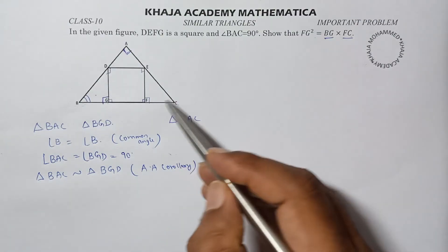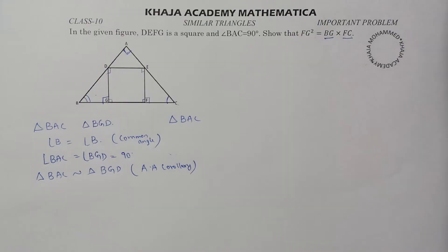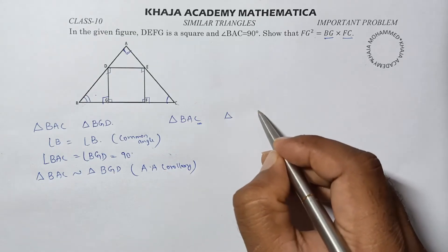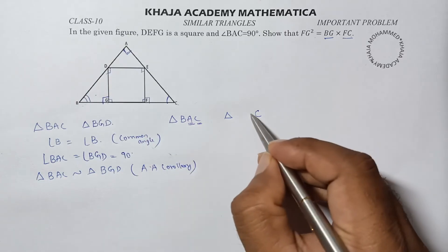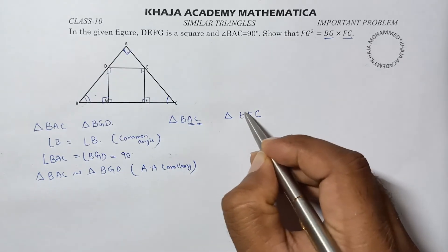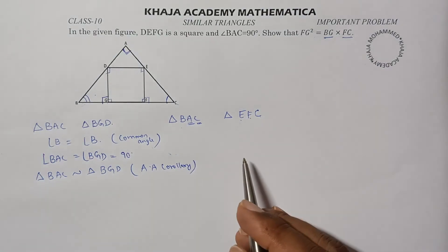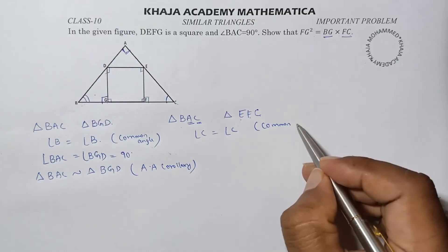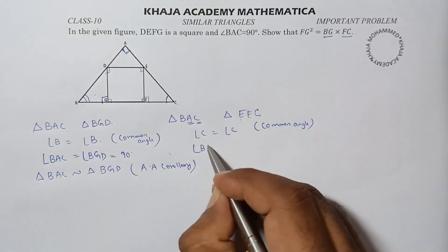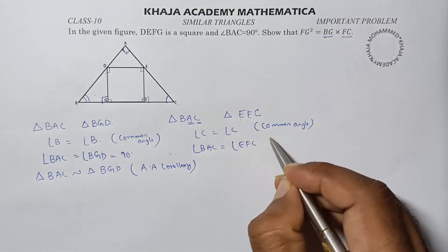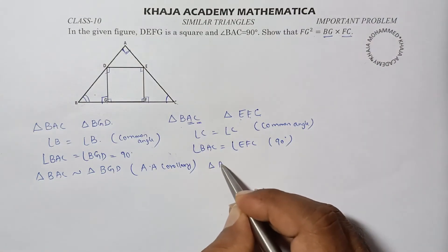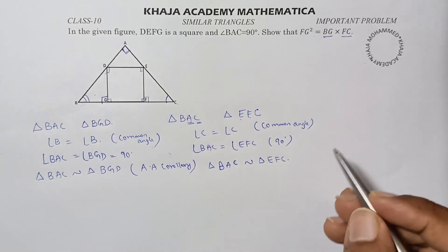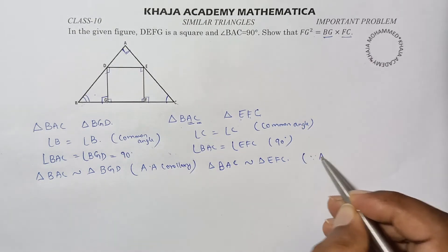Again, take triangle BAC and this right angle triangle. Angle C is common. When I write the big triangle, angle C is at the end, so order is most important. In the second triangle, keep C last and keep 90 in the middle, so F. The vertex left is E, so EFC. Triangle angle C equals angle C, which is common angle in both triangles, and angle BAC equals angle EFC, which is 90 degrees. Therefore, triangle BAC is similar to triangle EFC by angle-angle corollary.